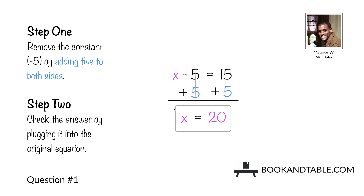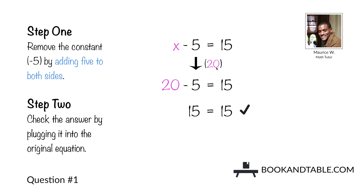Step two: check this answer by plugging it back into the original equation, x minus 5 is equal to 15. Replace the x with our answer, 20, and simplify. 20 minus 5 would be 15, and the left side has the same value as the right side, which means we've successfully found the value of x, which is 20.